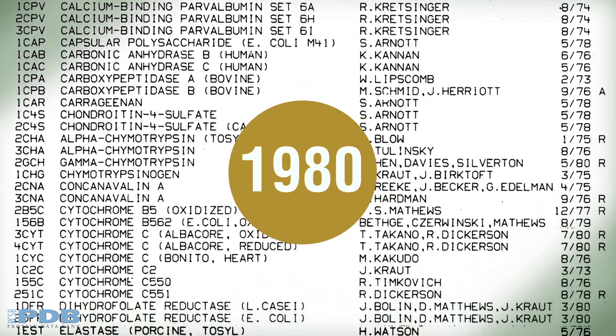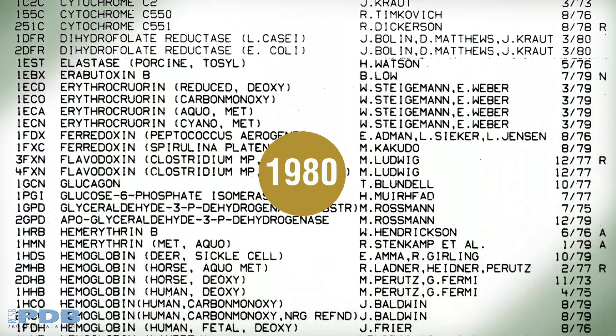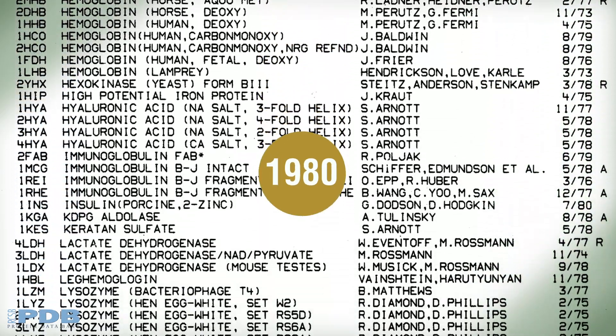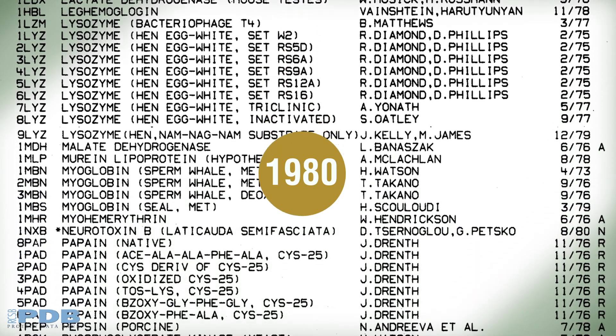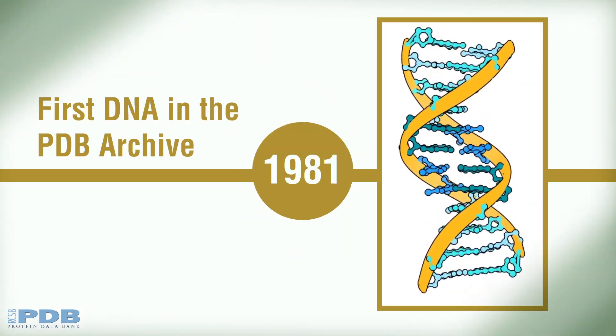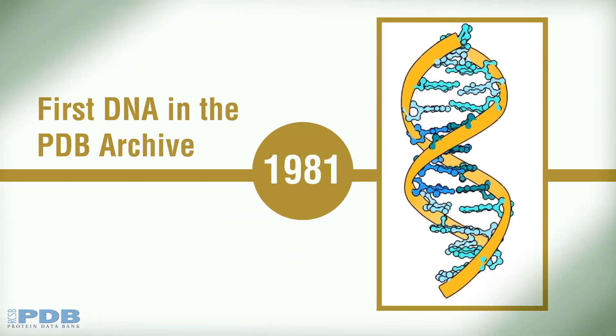In October 1980, ten years after the PDB was established, the PDB archive holdings contained 151 structures available for distribution. The following year, the first DNA structure was added to the PDB.